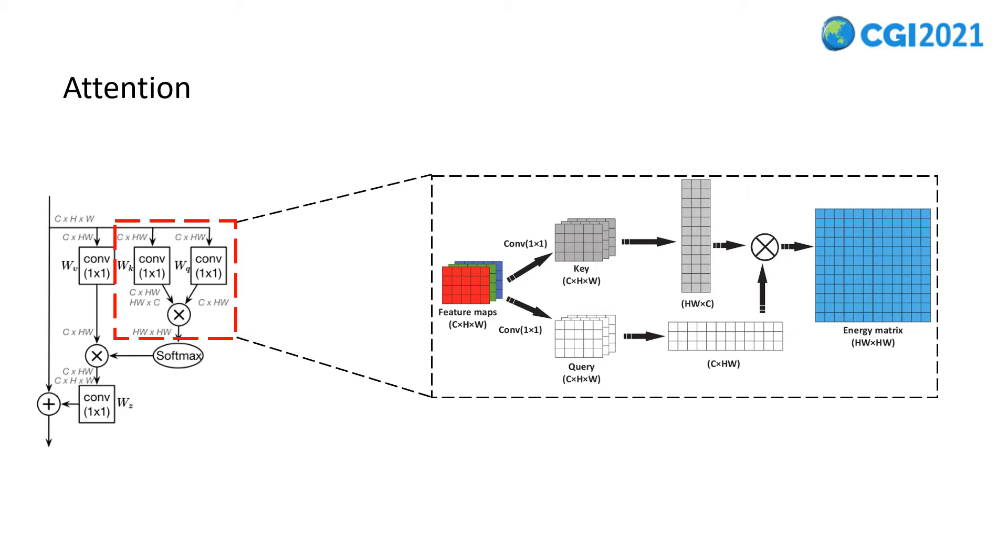Therefore, the relationship between two points in the image corresponds to an element in the energy matrix. In essence, matrix dot multiplication can be understood as the inner product of many vectors, and the inner product of two vectors can be expressed by this formula. If there is a strong correlation between two positions, their corresponding vectors will be similar, so the inner product will be large. As for the softmax, I will introduce it in the next slide.